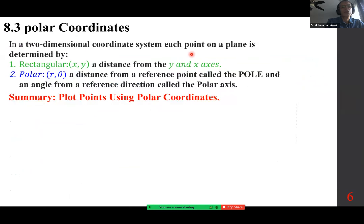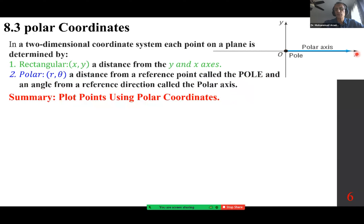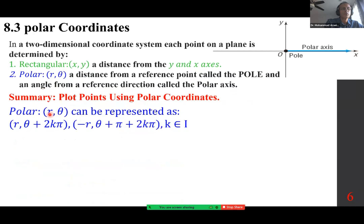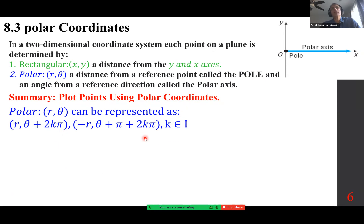In a two-dimensional coordinate system, each point on a plane is determined by either a rectangular format (x, y) — a distance from the y-axis and from the x-axis — or polar format (r, θ), a distance from the reference point called the pole, and an angle from the reference direction called the polar axis. Polar coordinates can be represented infinitely many ways, simply because the angle is not unique. We can add 2kπ where k is an integer, or change r to negative and add π.